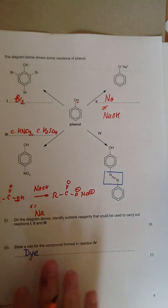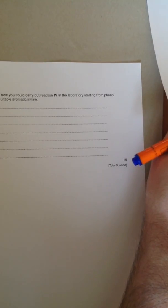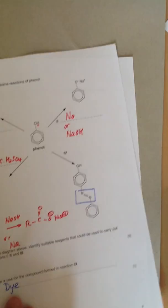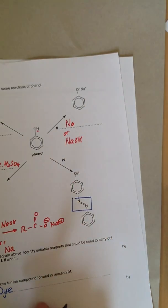The second part of the question, on the second sheet, says outline how you would carry out reaction 4 in the laboratory, starting from phenol and a suitable aromatic amine. So, how could we make that from phenol and a suitable aromatic amine?